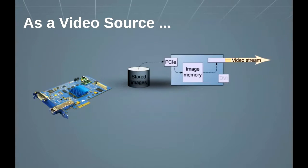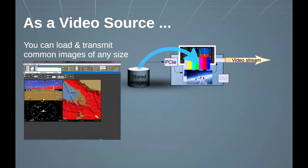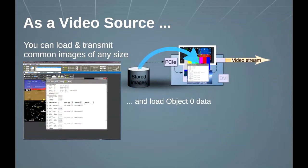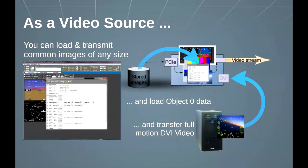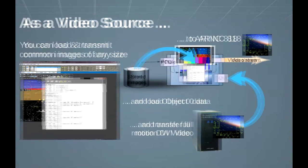As a video source, you can load and transmit any common image file — bitmap, JPEG, etc. The application automatically scales these images to match the required video resolution. You can easily load ARINC 818 object zero data for transmit. For live video, use the card's DVI input port to transfer graphics video directly onto the ARINC 818 link.